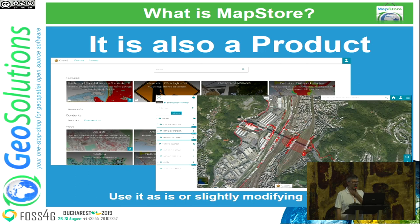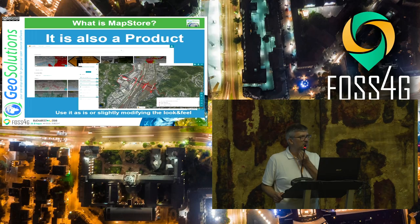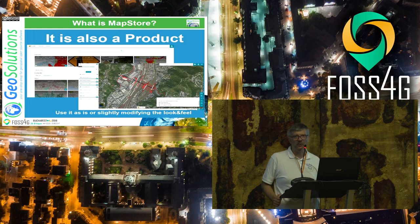Then there is the second life of MapStore as a product. If you are not a developer and you just need something to publish your own maps, you can use MapStore too because it's a complete product by itself. It's completely open source — you can download it from our GitHub repository, get the final binary package, install it, and just use it. Or you can customize it a little bit without being a developer, just by editing some configuration files or using our administrative UI.